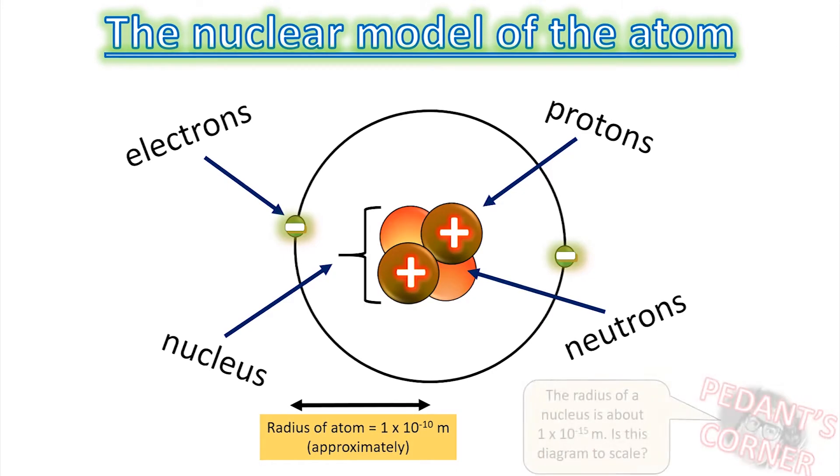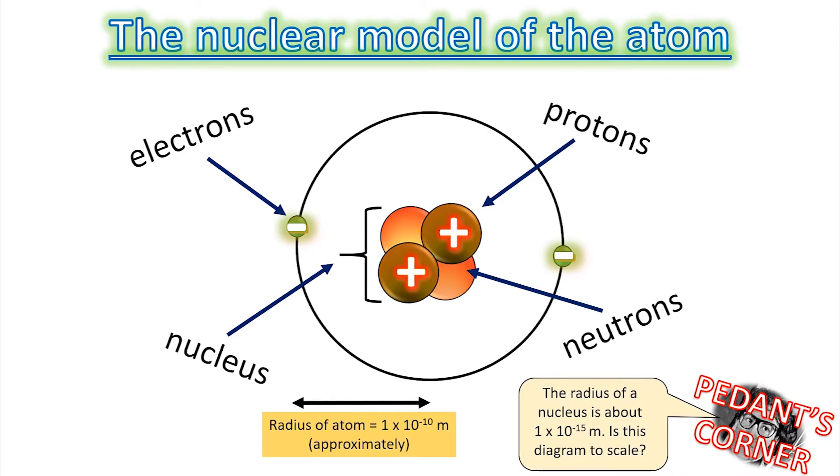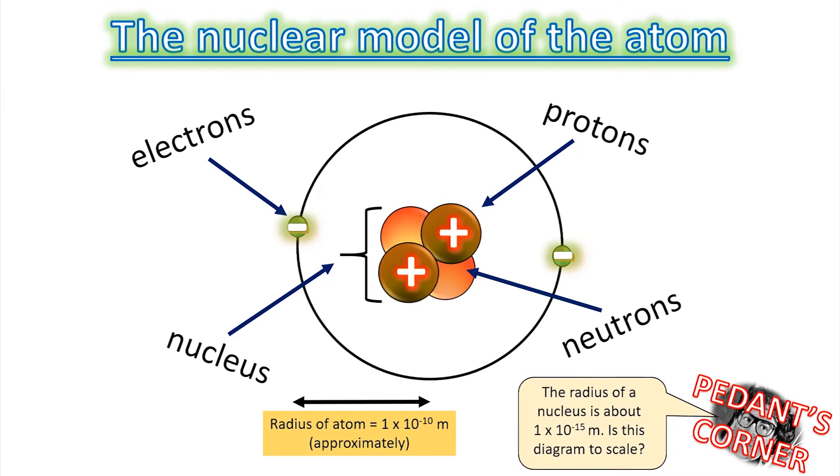But even worse than that, the actual radius of the nucleus is about 1 times 10 to the minus 15 meters. That diagram is not to scale. The nucleus is actually about 100,000 times smaller. It would be a tiny dot on this diagram, which would make a rubbish diagram, hence we don't do it in a very realistic way.